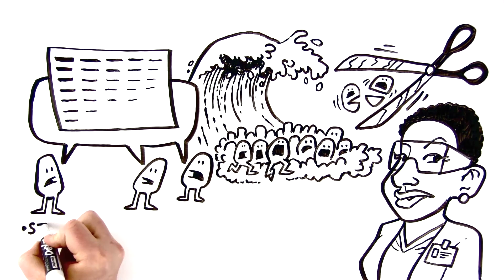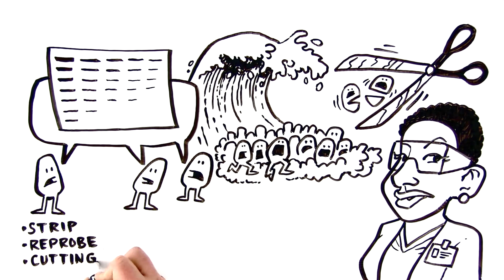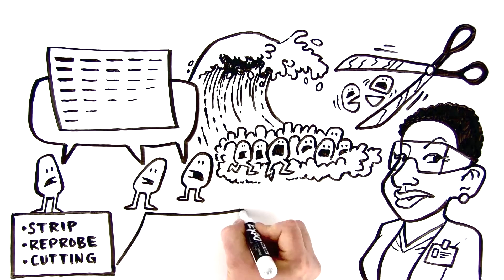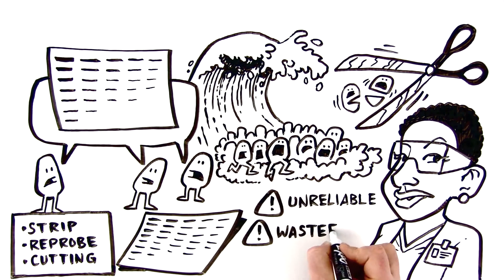And you should too. Traditional strip, reprobe, and cutting practices during Western blotting to detect multiple proteins on the same blot are unreliable and wasteful.